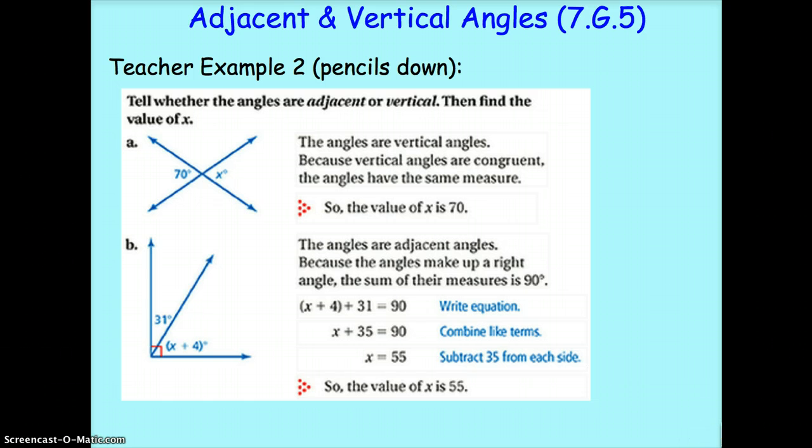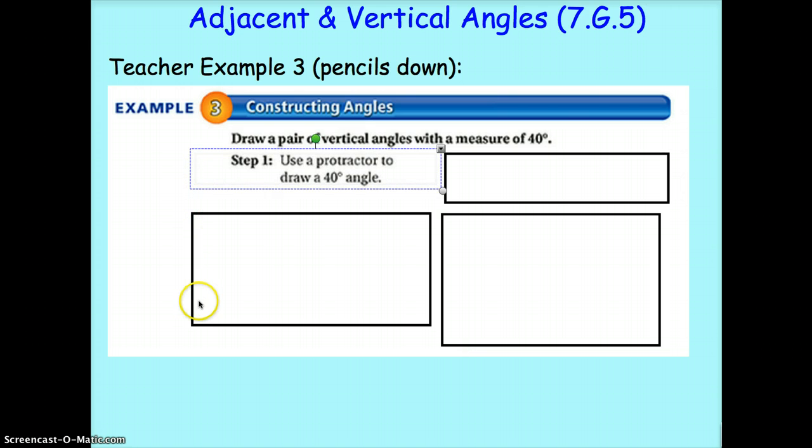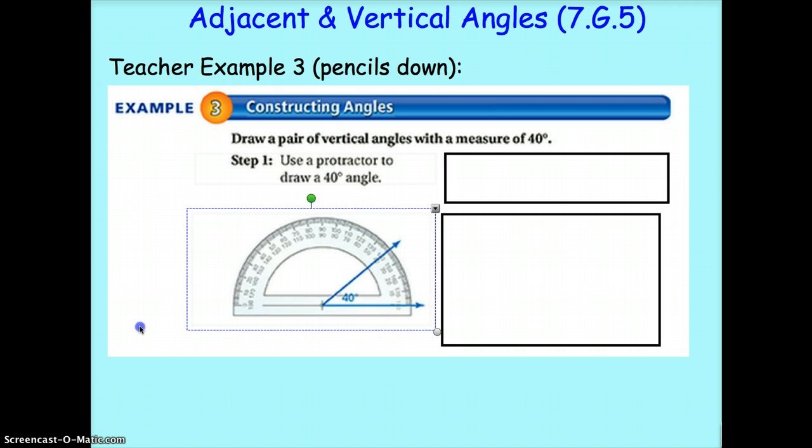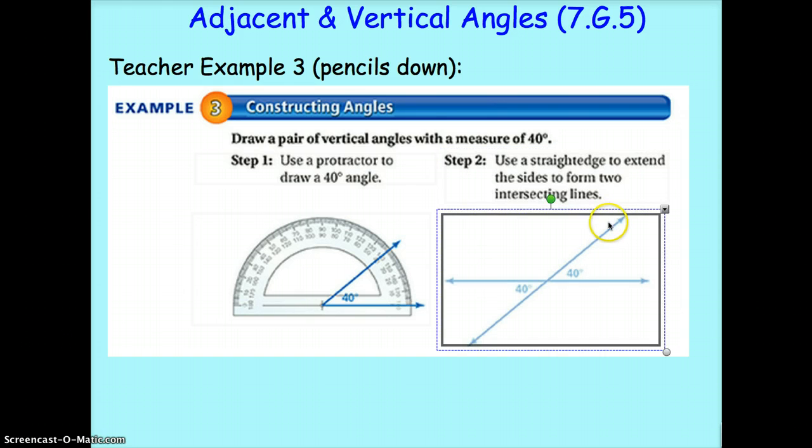Okay. Let's go ahead and take a look at teacher example 3. Here we are constructing angles, so it's asking us to draw a pair of vertical angles with a measure of 40. So, step 1 is use a protractor to draw a 40 degree angle, which we have right here using our protractor. Next, we need to use a straight edge to extend the sides to form two intersecting lines.